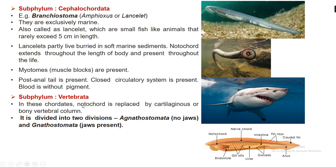The third sub-phylum is Vertebrata. Here, the notochord is replaced by a cartilaginous or bony vertebral column. Sub-phylum Vertebrata is divided into two divisions: Agnathostomata, organisms with no jaw, and Gnathostomata, where jaws are present.